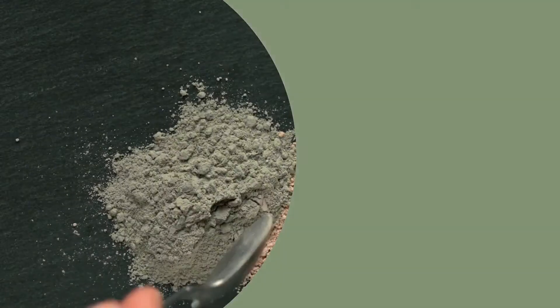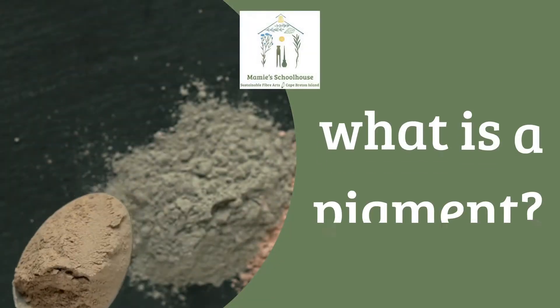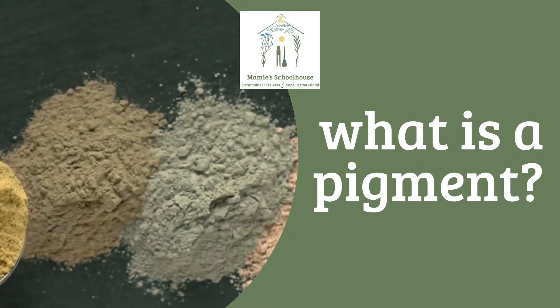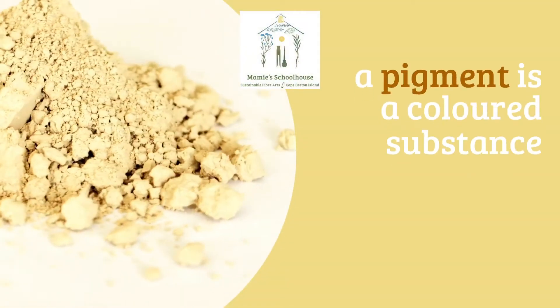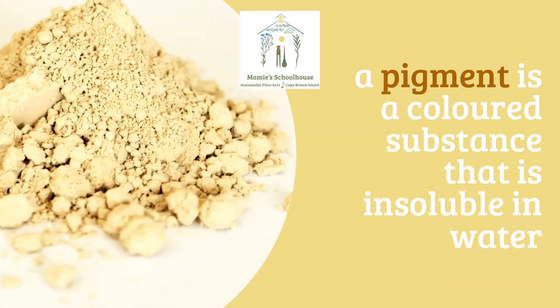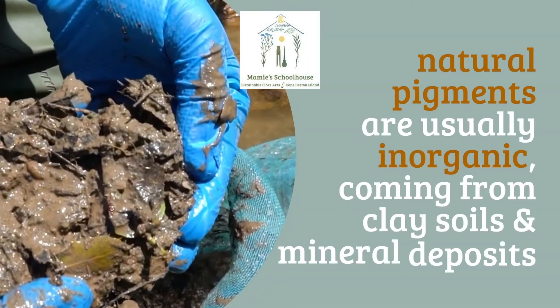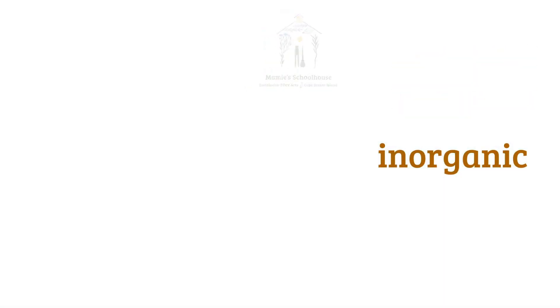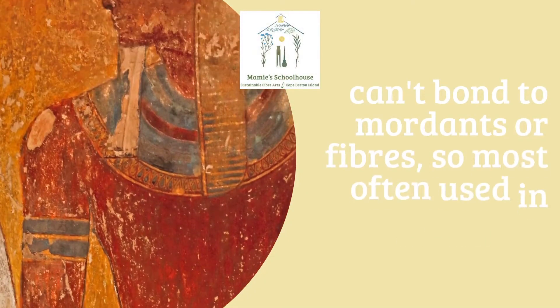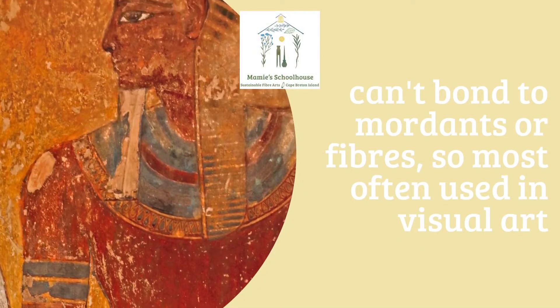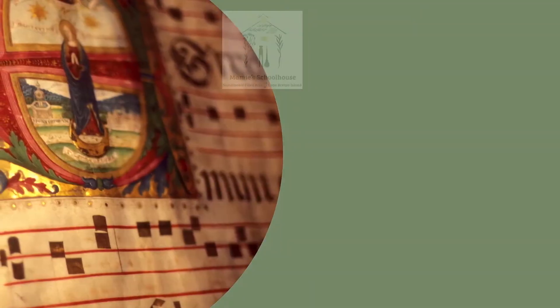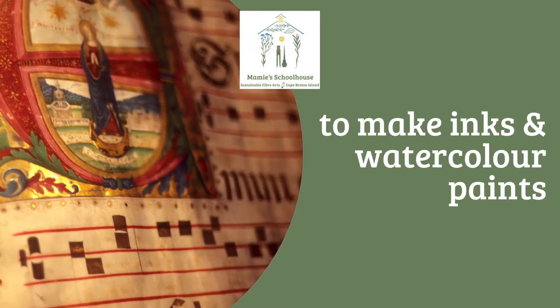What is a pigment and how does it differ from a natural dye? Like a natural dye, a pigment is a colored substance, but unlike a natural dye, a pigment is insoluble in water. Pigments are inorganic, coming from clay, soils, and mineral deposits. Pigments can't bond to mordants or fibers, so they're usually used in visual art to make inks, watercolor paints, oil paints, and pastels.